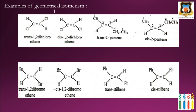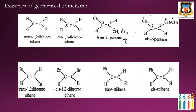For example, when the two chlorines are on opposite sides, it is trans-1,2-dichloroethene. When chlorines are on the same side, it is cis-1,2-dichloroethene. In trans-2-pentene, the two hydrogens are on opposite sides of the double bond. Since CH₃ and the ethyl group are different, we determine cis or trans based on the position of the two hydrogens — here they are on opposite sides, so it is trans-2-pentene. When the two hydrogens are on the same side, it is cis-2-pentene.